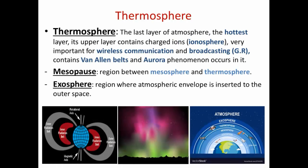The thermosphere layer is the last layer of atmosphere and is the hottest one, as it is the nearest to the sun. Its outer part is also called the ionosphere layer, which has some charged ions that are very important for wireless communication and radio broadcasting. These ions reflect radio waves transmitted by radio stations and communication centers.